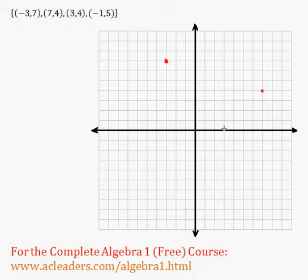3 and 4, and negative 1 and 5. Okay, so that is our relation, just those 4 points.